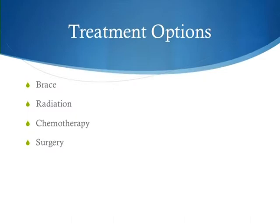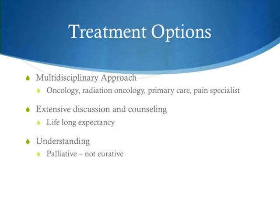Treatment options include bracing, radiation, chemotherapy, and surgery. Whatever treatment option is pursued, the most important aspect of spine tumor care is that this is really a multidisciplinary approach. Whenever we see these patients, we're usually in contact with the oncologist, primary care physician, pain specialist, and radiation oncologist — making sure we're all on the same page, communicating effectively and with the same information, and agreeing on the most appropriate treatment. These patients can be tough to work with in the clinic — I usually have a long discussion counseling them for more than an hour regarding issues in their care.